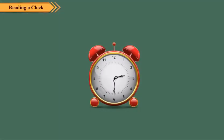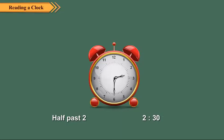Now, observe this clock. Here, the hour hand is halfway between 2 and 3. The minute hand is at 6. So, the time is 30 minutes after 2:00. We write it as half past 2, or 2:30. When the minute hand is at 6, the time is half past the hour.